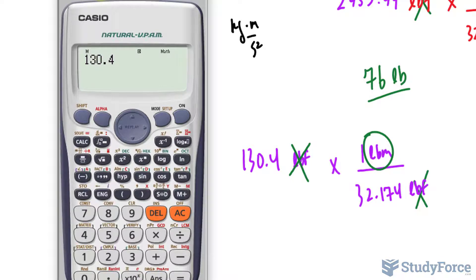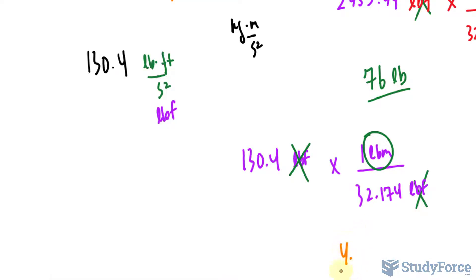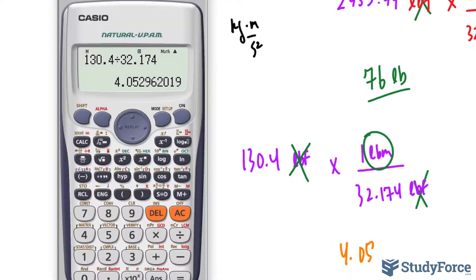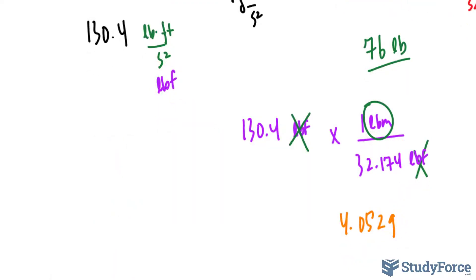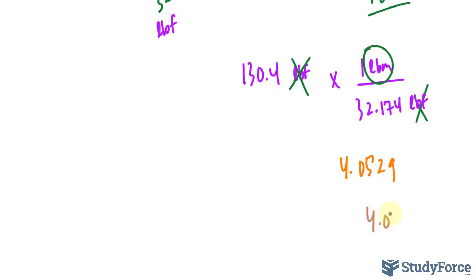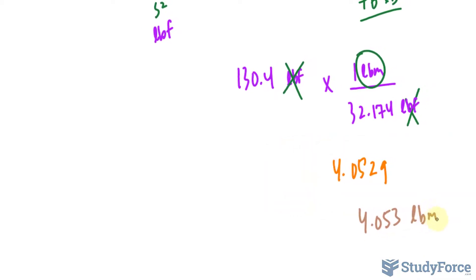I'm not looking for that of course, but I can convert that later. So this number divided by 32.174 using the same technique as before, that's 4.05. Let's stop writing after four significant figures. So 4.0529 and we'll be rounding this where I have 4.053 lbm or simply pounds.